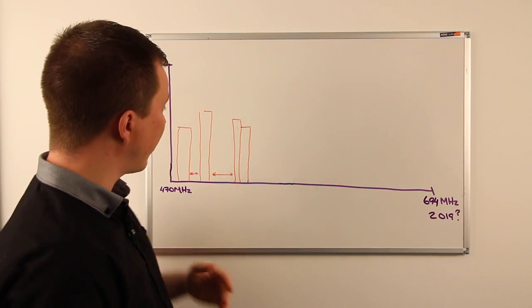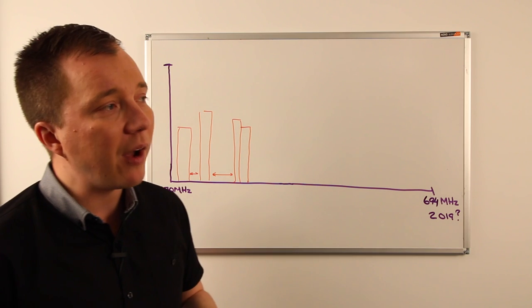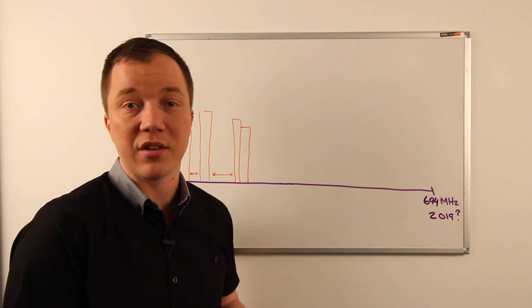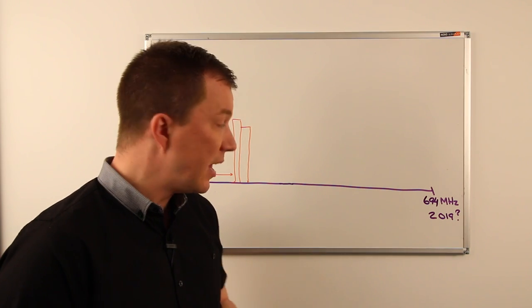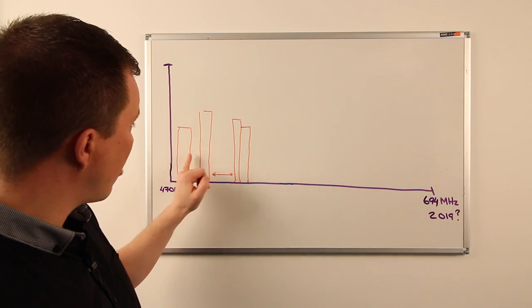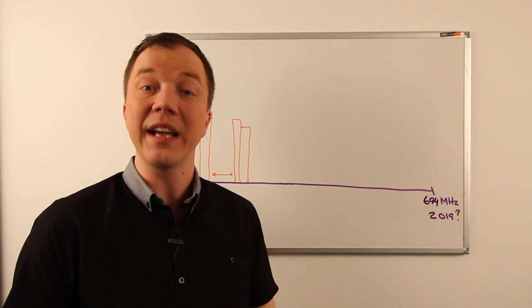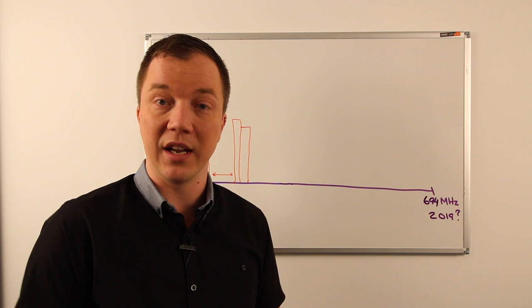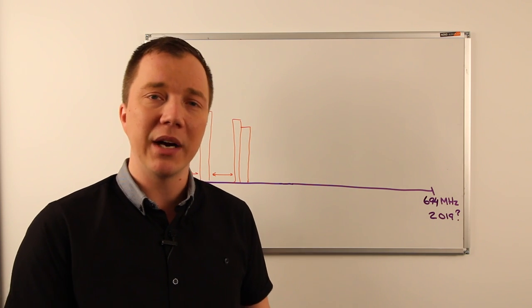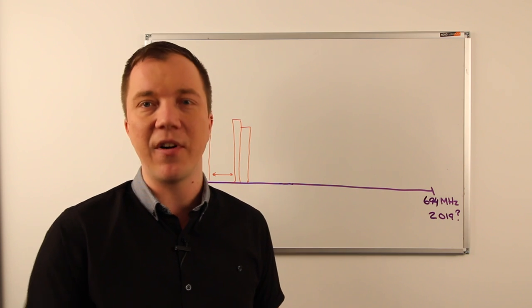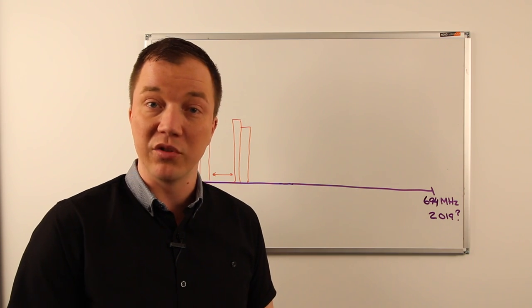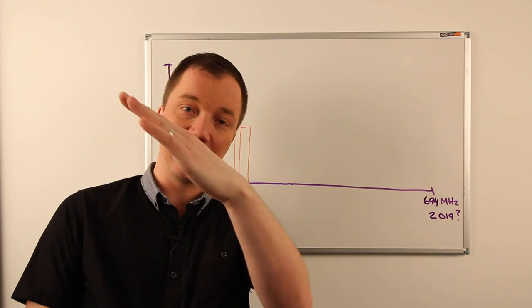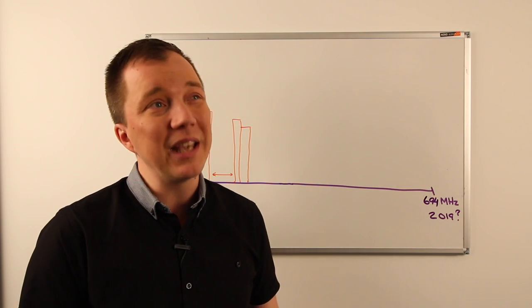Spectrum is a finite resource with a lot of potential for use. The view from regulators is that this white space isn't used effectively enough. Let's take an example of PMSE usage in London. If I asked how much PMSE usage is there at five o'clock in the morning, I think we'd all agree that usage would be next to nothing. As the day goes on, usage goes up because that's when events start, and peak usage is probably somewhere between 6 p.m. to 10 p.m.